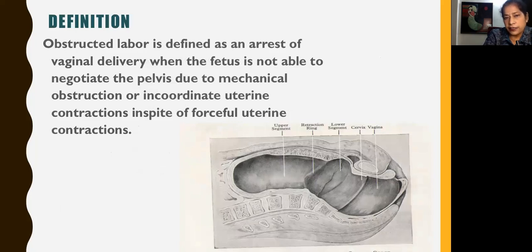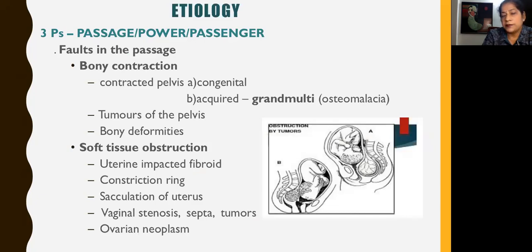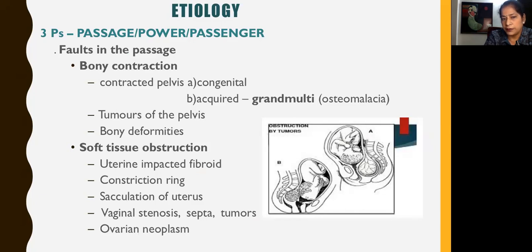Obstructed labour is an arrest of vaginal delivery when the fetus is not able to negotiate the pelvis due to mechanical obstruction or incoordinate uterine contractions in spite of forceful uterine contractions. The three P's — power, passage, and passenger — and faults at these levels result in obstructed labour. Coming to faults in the passage, that is the pelvis: there could be bony contraction. A contracted pelvis could be congenital or acquired, as in cases of grand multiparity due to osteomalacia. There could also be tumours in the pelvis or other bony deformities.